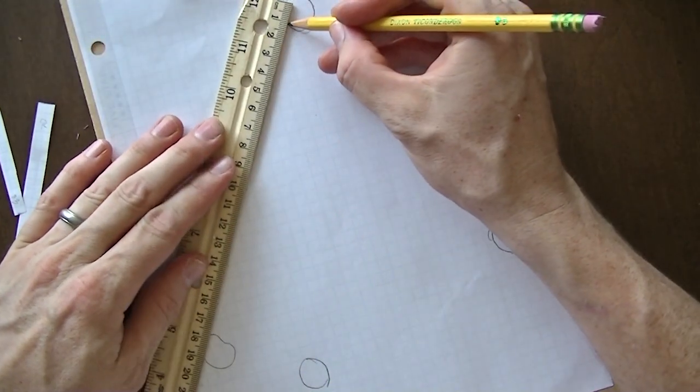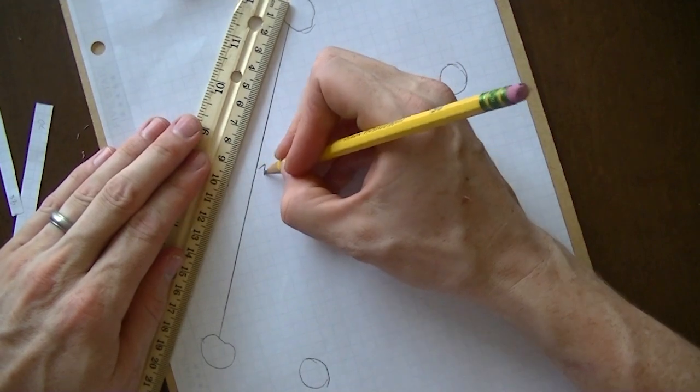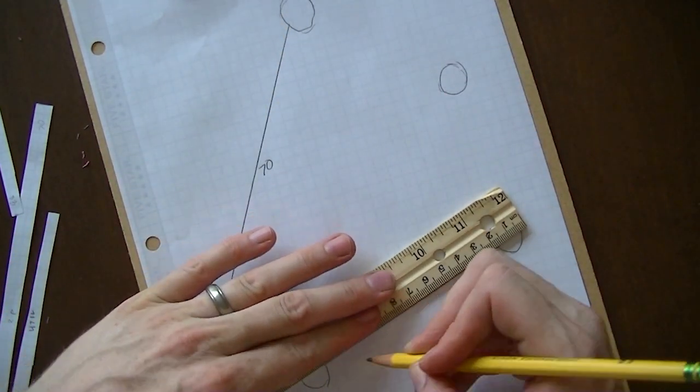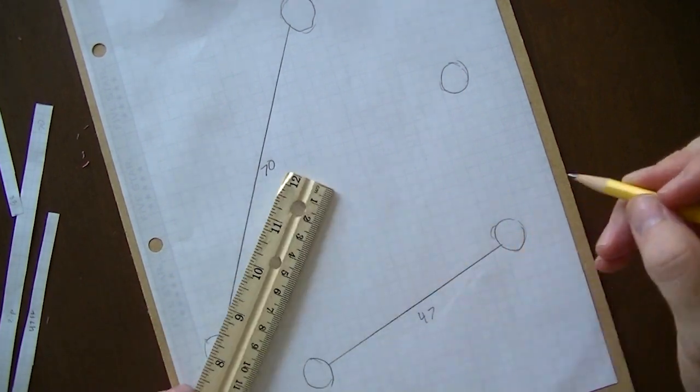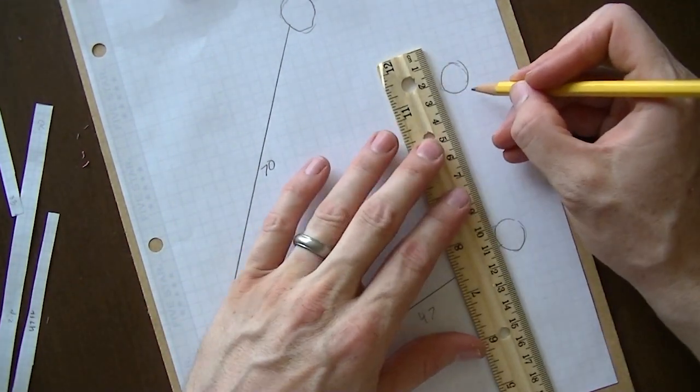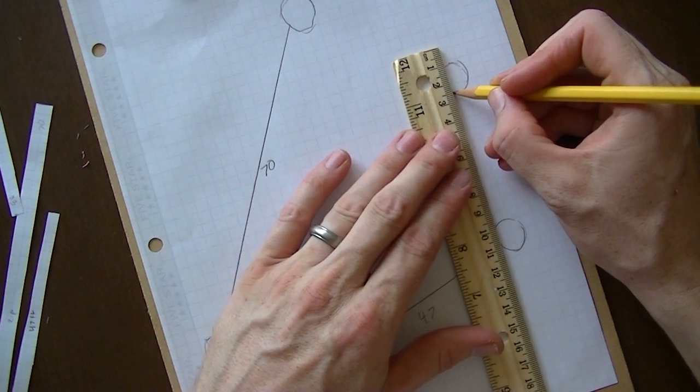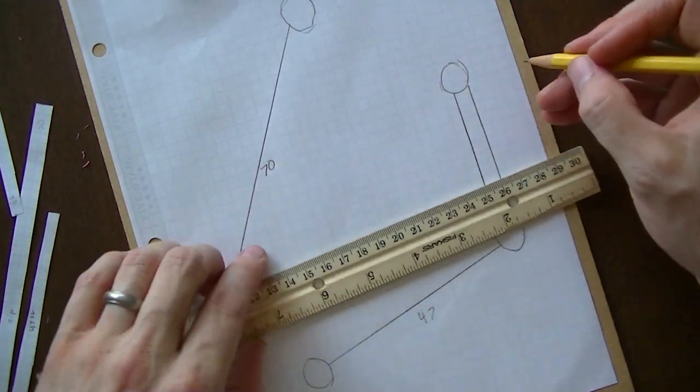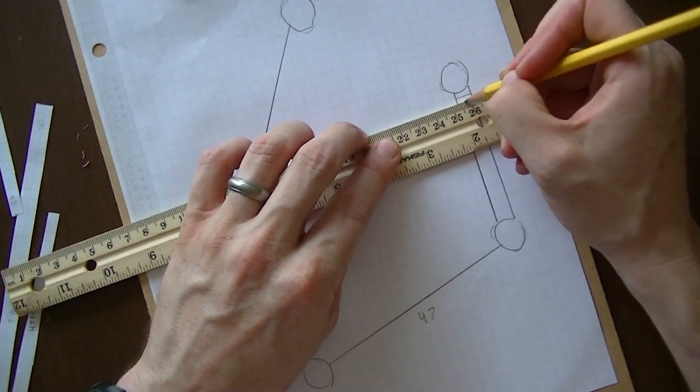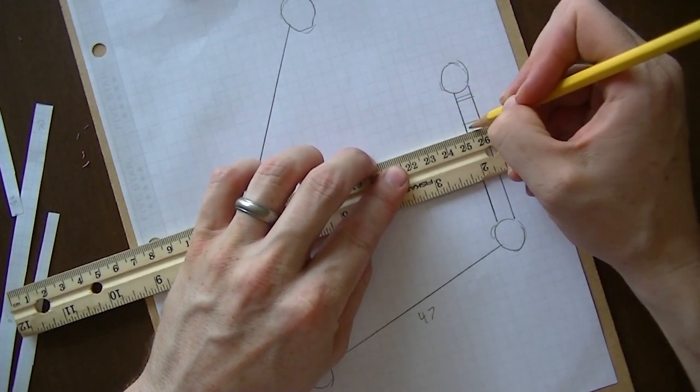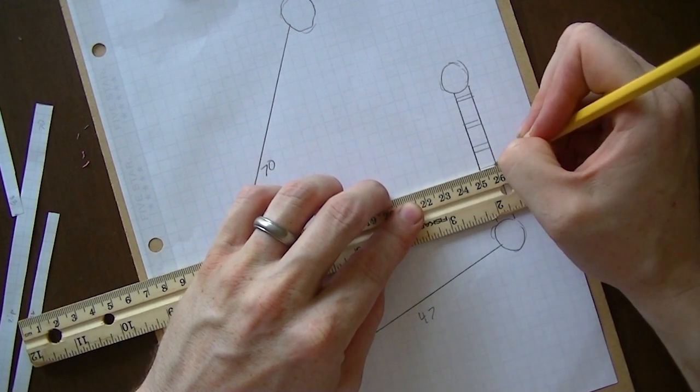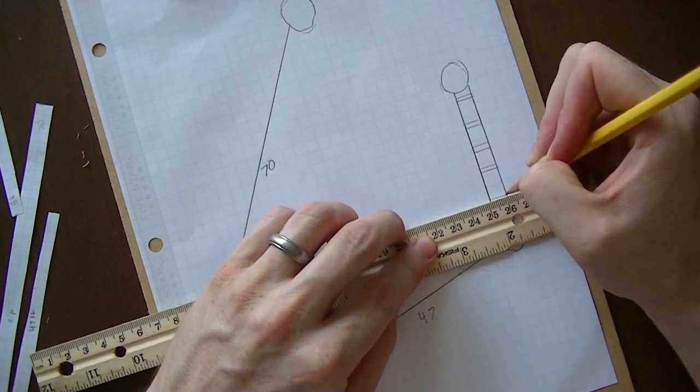I have my 70-foot section that's going to be a zipline, so a single line. My 47-foot section is also a zipline. This one here I'm going to have as a bridge, so I'll draw two lines as a walking platform. This is just a visual so I remember what it is.